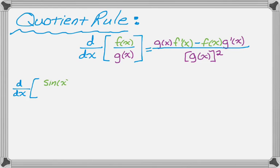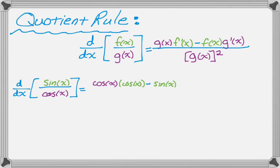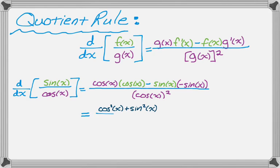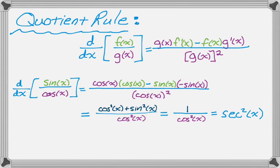Let's do one example: the derivative of sine over cosine. The derivative of sine is cosine, and the derivative of cosine is negative sine. So it's going to be bottom — cosine — times the derivative of the top — cosine — minus top — sine of x — times the derivative of the bottom, which is negative sine of x, all over cosine squared. Cleaning this up gives cosine squared plus sine squared over cosine squared. The numerator is 1, so we get 1 over cosine squared, which is secant squared. And sine over cosine is actually tangent, so what we just found is that the derivative of tangent is secant squared — you might want to memorize that.